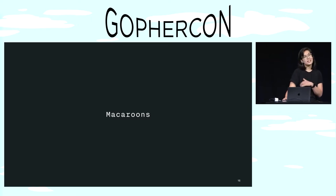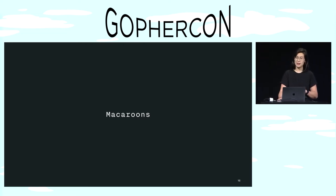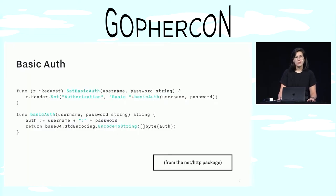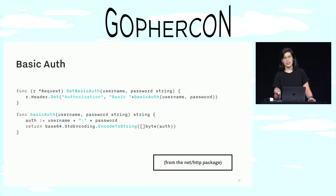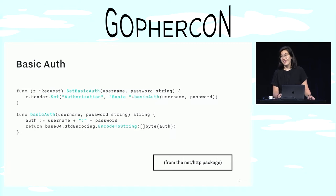In order to dig into that, I first want to step back and talk briefly about basic auth and then build on that to show you how we make macaroons. So when you make a request using basic auth, you just stick a username and password in the request header's authorization field, and that's what that looks like in Go's standard library. You can just call set basic auth on any HTTP request, and it just kind of works.